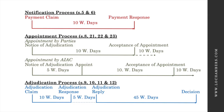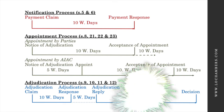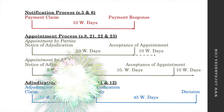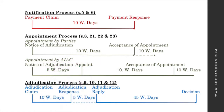The adjudicator will then deliver his or her decision within 45 working days upon receiving the adjudication response or adjudication reply, whichever is later. If no adjudication response is received, the 45 days shall run from the expiry of the prescribed period for the adjudication response, or as the parties agreed otherwise.